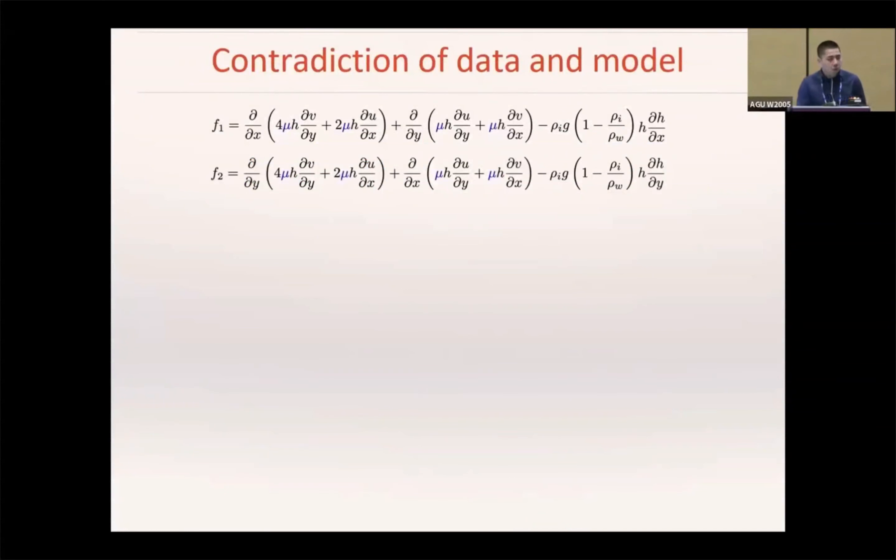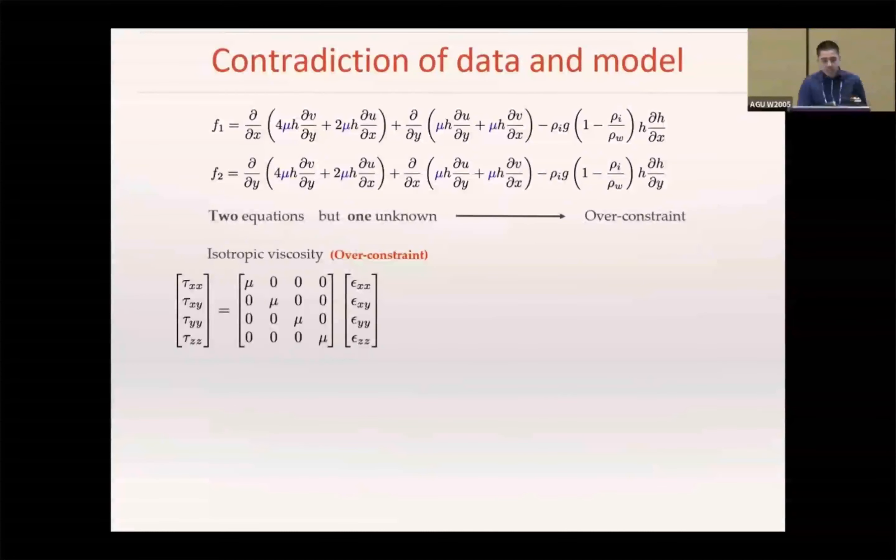We recall that the classical shallow shelf equation is derived under the assumption of isotropic viscosity. In that case, inverting for viscosity gives us two equations but only one unknown, which causes the problem to be over-constrained. To reduce the over-constraints, introducing a fully anisotropic matrix is too much. Instead, we want to introduce just one more variable into our model to close the system. Considering the non-homogeneous structures and crevasses in the vertical direction of ice shelves, a realistic assumption is that the anisotropy of ice viscosity actually occurs in the vertical direction.